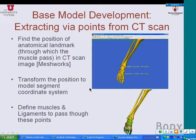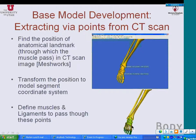Muscles are defined by insertion points and the via points through which they pass. For example, we are trying to define the tibialis anterior muscle. We assume it passes through an anatomical landmark on the tibia, and the insertion point is the anatomical landmark on the first metatarsal. This is a CT scan image from a single subject. We open these images into image analysis programs such as Mimics. We can measure the position of these anatomical landmarks from this program. The coordinate systems in the image need to be transformed into the coordinate system of each segment to which the anatomical landmark is attached.